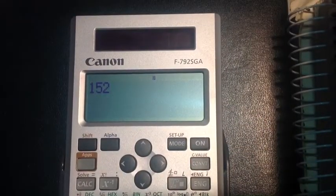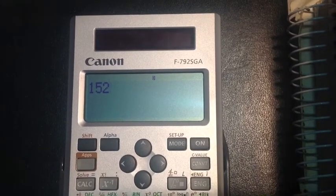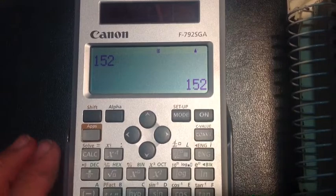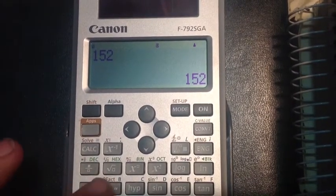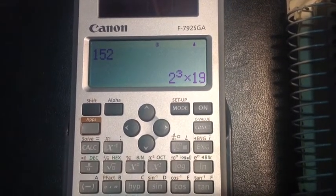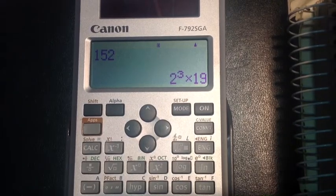You can also do prime factorization of numbers. For example, I'm going to do a prime factorization of 152. So I'm going to enter that, hit equals, and then I'm going to hit shift and this key here to activate the prime factorization. And it turns out that 152 factorized is 2 cubed times 19.